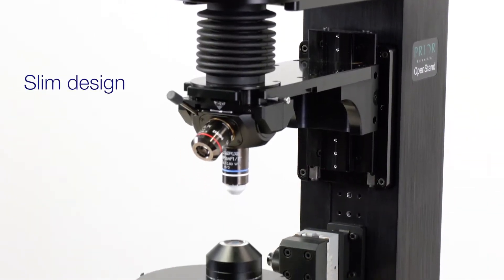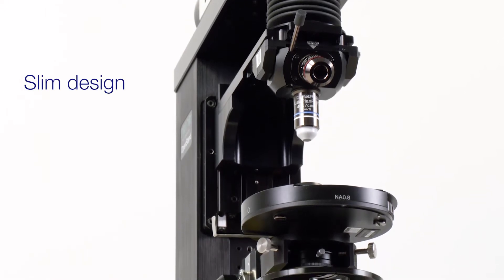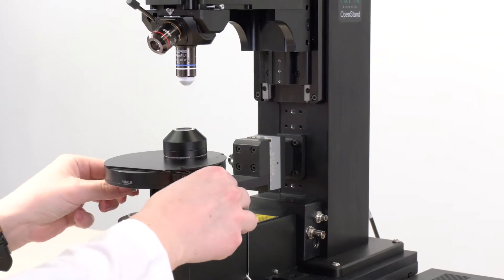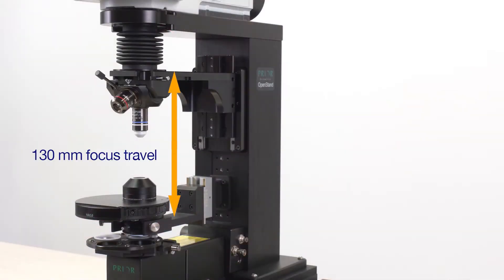The open stand microscope frame's slim design minimizes the restrictive workspaces and sample positioning of traditional microscope frames. Its large, 130 mm focus travel accommodates a wide variety of samples, from tissue sections to whole animals.